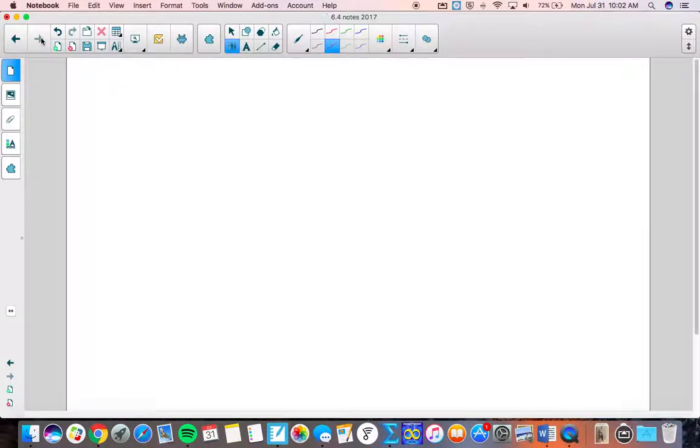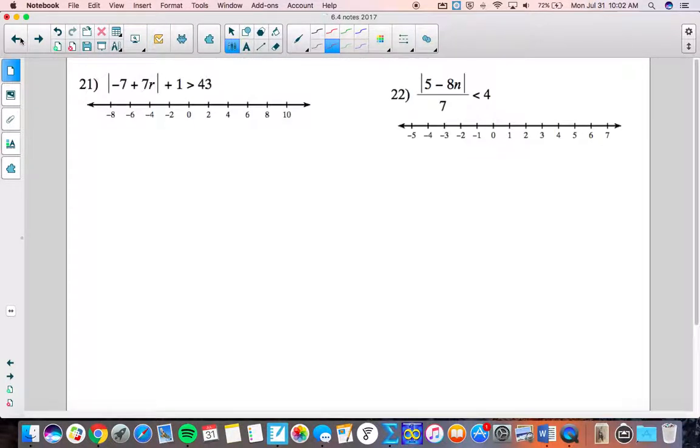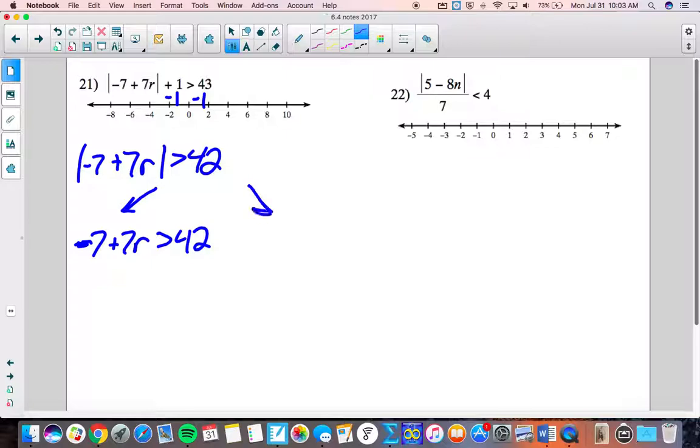Let's try a couple toughies. Last ones here. So before we can split, we got to subtract this one. So now we're working with a 42. Now that our absolute value symbols are isolated, we can split it. So drop the symbols and just copy it down. And then over here, copy it down, dropping the symbols, but make the opposite symbol and make the opposite number.